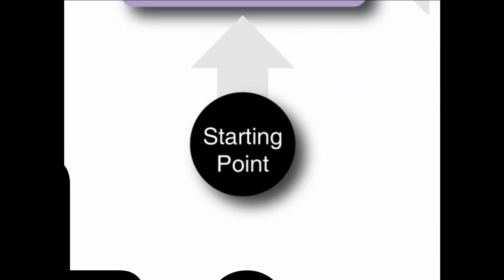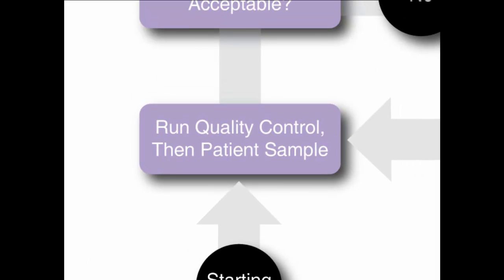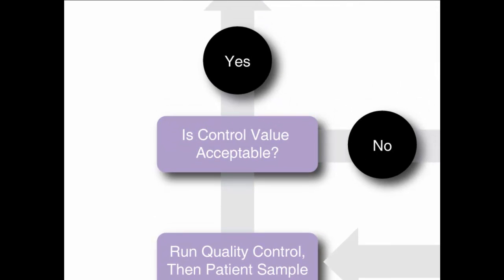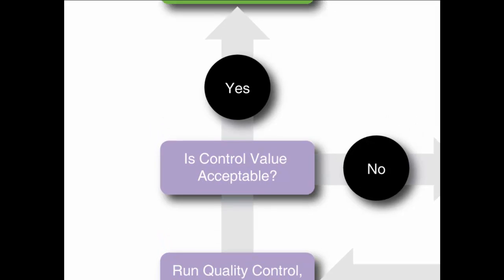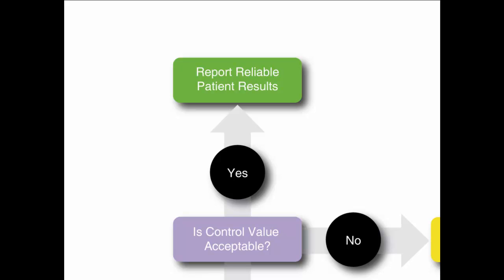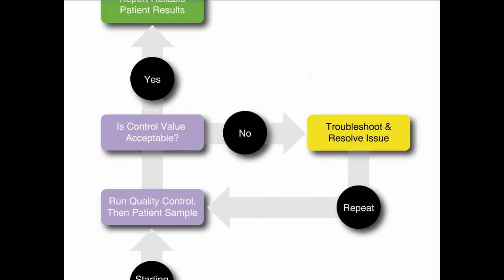Start by running a quality control before running patient samples. Determine if the control value is acceptable. If it is, you can report reliable patient results. If it isn't, troubleshoot, resolve the issue, and repeat the test.